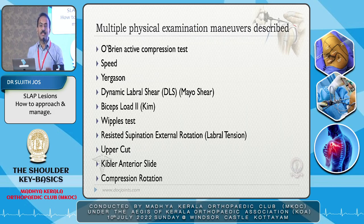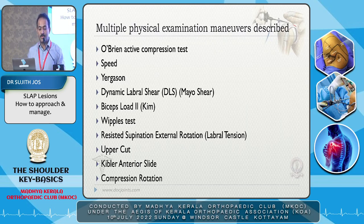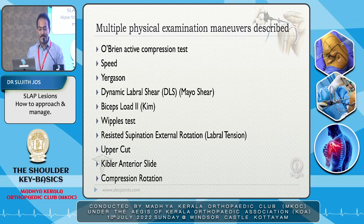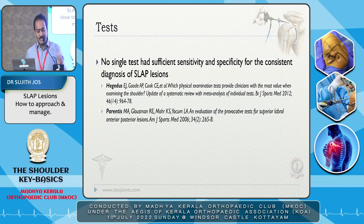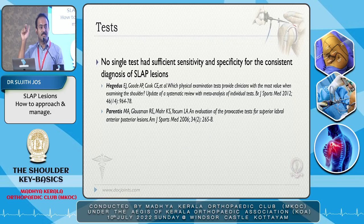Multiple examination maneuvers are described, but one or two are important, not all of them. The O'Brien active compression test is the most important one — if positive, you have a high clinical suspicion that something is there beyond the rotator cuff or labral tear. The Speed and Yergason tests assess the biceps tendon. The DLS test, biceps load, crank test, and Whipple's test are also used. No single test has sufficient sensitivity or specificity for diagnosing SLAP, but they tell you something is wrong and you should look at the MRI more carefully.